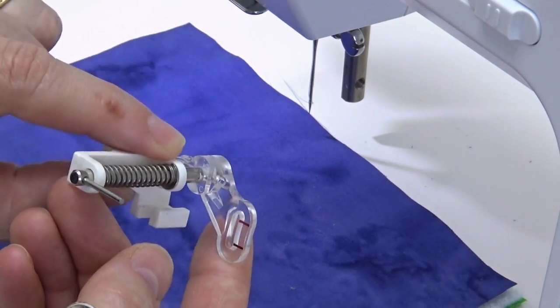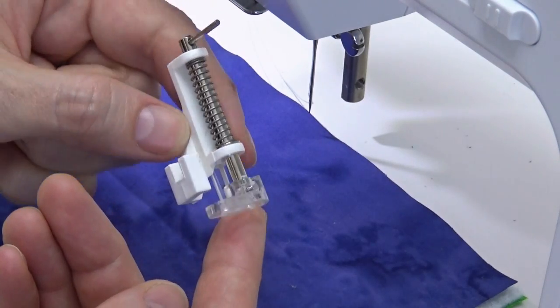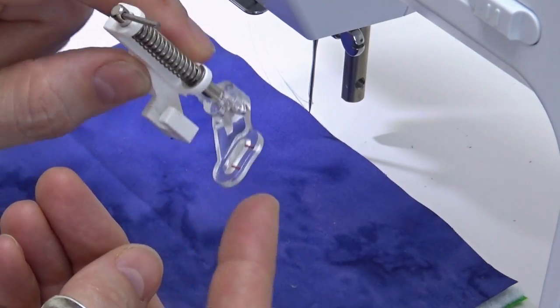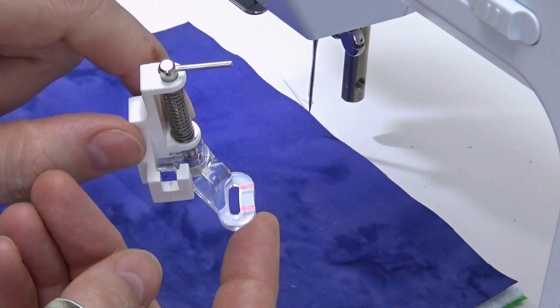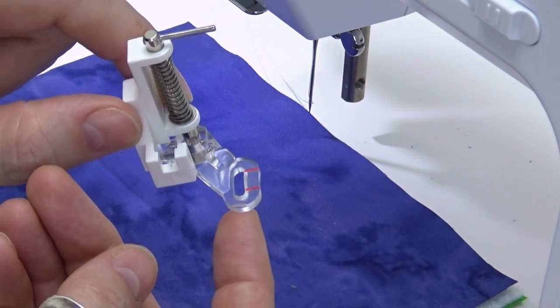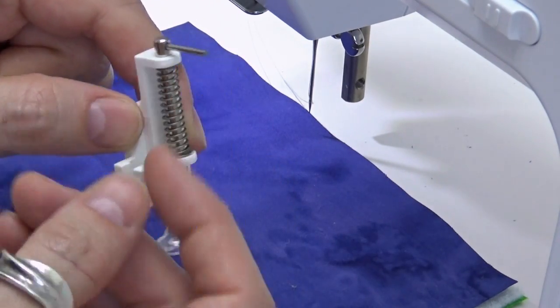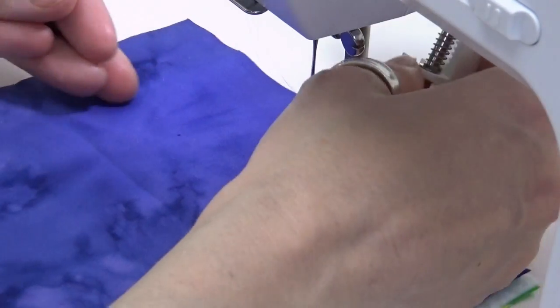Straight out of the package this low shank darning foot isn't really all that well designed. We've got a solid toe here, this is a full oval shape. We've also got this bar here and that's going to cause us some problems and I'll show you why.